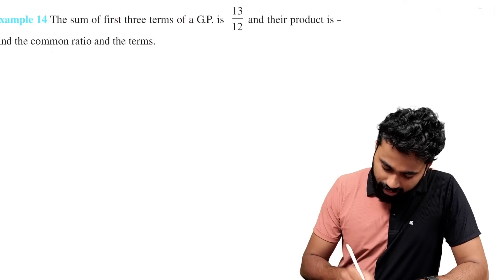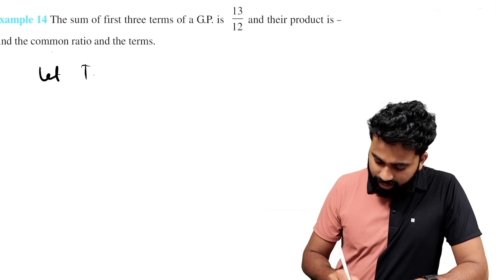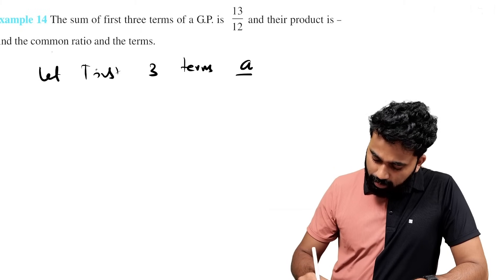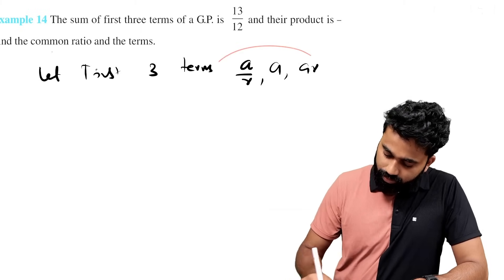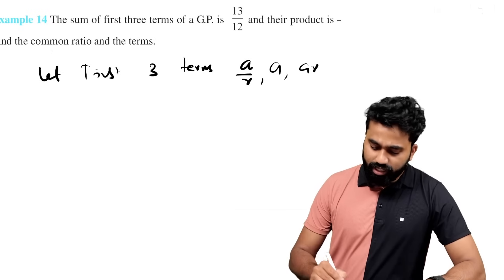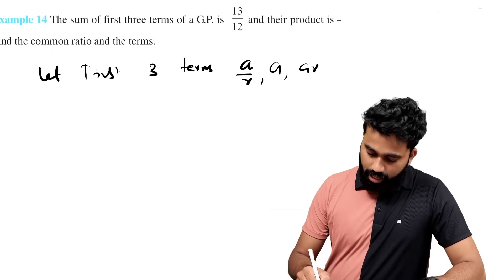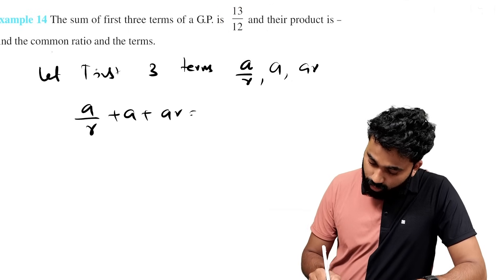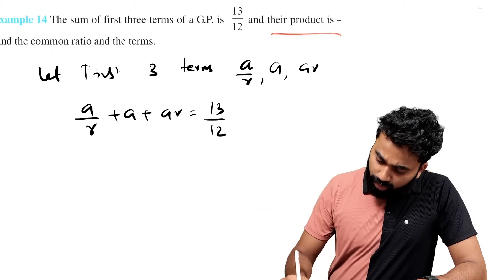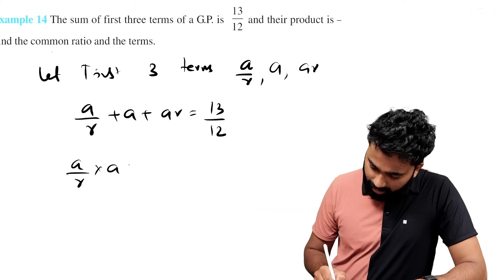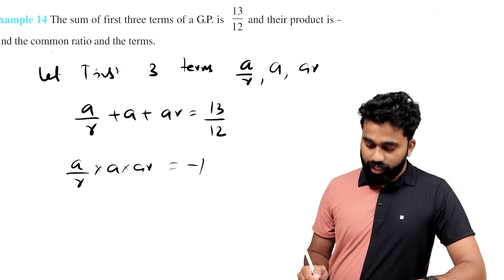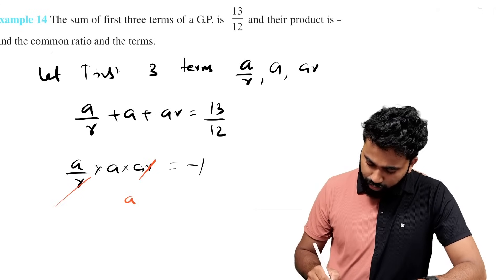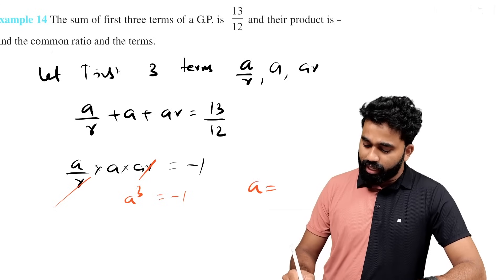The sum of the first three terms of a GP. The terms are — let the first three terms be: A by R, A, and AR. The sum is GP equal to 13 by 12. That is A by R plus A plus AR equal to 13 by 12. The product is equal to minus 1. That is A by R into A into AR equal to minus 1. This relation gives A cubed equal to minus 1. A equal to minus 1.